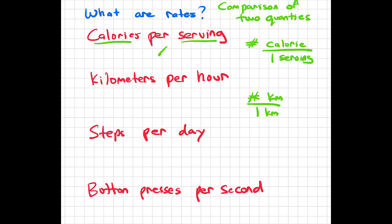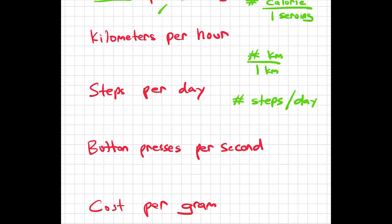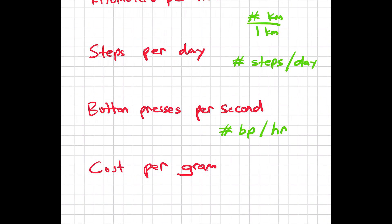So in steps per day, we're looking for the number of steps per day. And with button presses per hour, it would be button presses per hour and the number of button presses can be whatever. And again, cost per gram — they would have to give you some units here, so let's say cost in dollars per gram, then it would be dollars per gram.